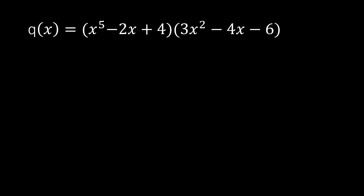Another one is q of x equal to x to the power 5 minus 2x plus 4, times the entire 3x squared minus 4x minus 6. So getting the derivative of that one, we just have to do our product rule, in which we follow: q prime of x equals g times f prime plus f times g prime.